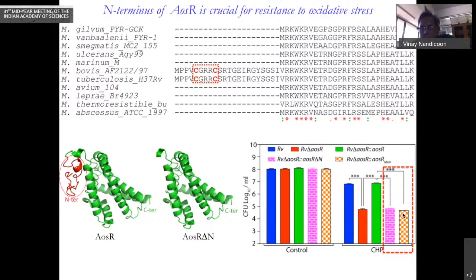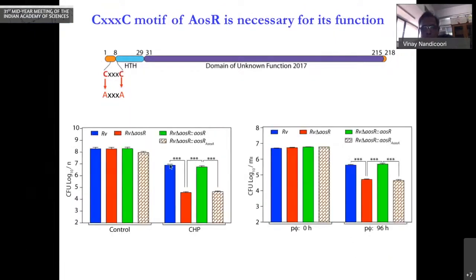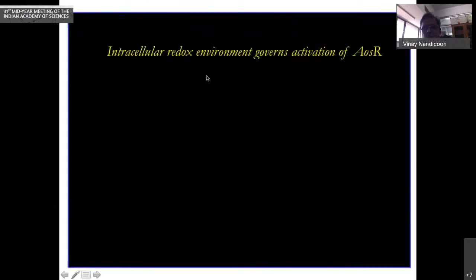While the wild type could beautifully complement, the mutant of the N-terminal region failed to do so. When we took another transcription factor which has no N-terminal region, even that did not complement. We thought it may be because the cysteine residues play an important role in oxidative stress. So maybe if we mutated the cysteines, what happens? We mutated the cysteine residues and did not get any complementation.